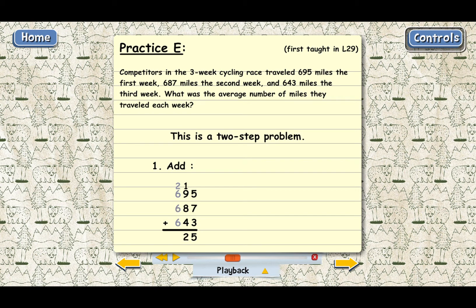Then in our last column we have the 2 that we carry plus 6, that's 8, 8 plus 6 is 14, and 14 plus 6 is 20. So go ahead and put 20 below, and that's going to give us 2025.